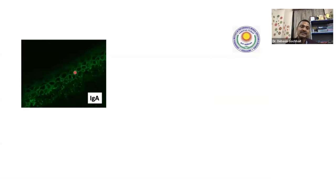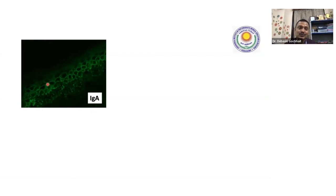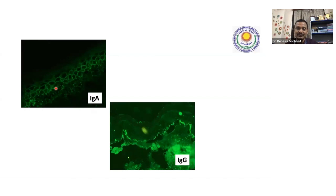Here you see fishnet pattern throughout the epidermis — basal layer included. So this is likely pemphigus. But look — I have shown IgA, not IgG. Remember, you have to see which antibody also. So this is not pemphigus vulgaris — this is IgA pemphigus. In pemphigus vulgaris, you will get IgG; in IgA pemphigus, you will get IgA. The pattern remains the same but the antibody positivity changes the diagnosis.